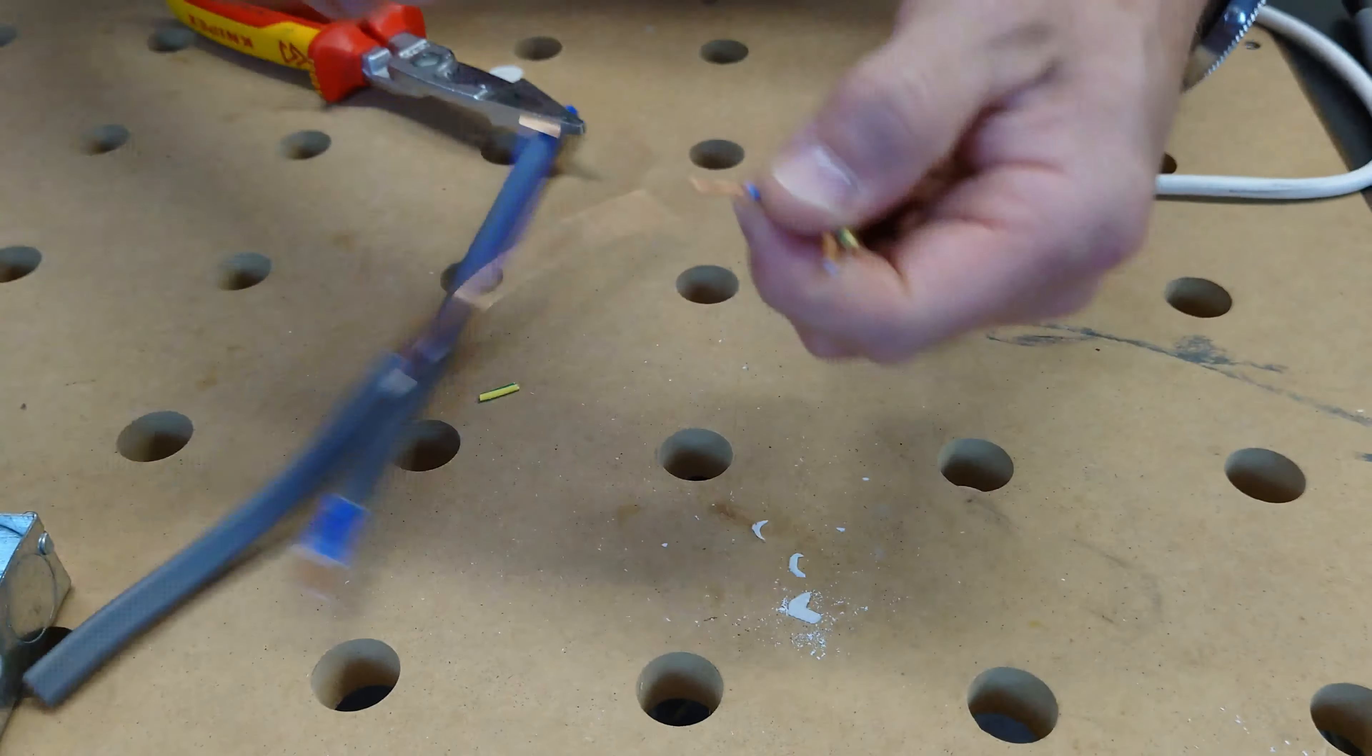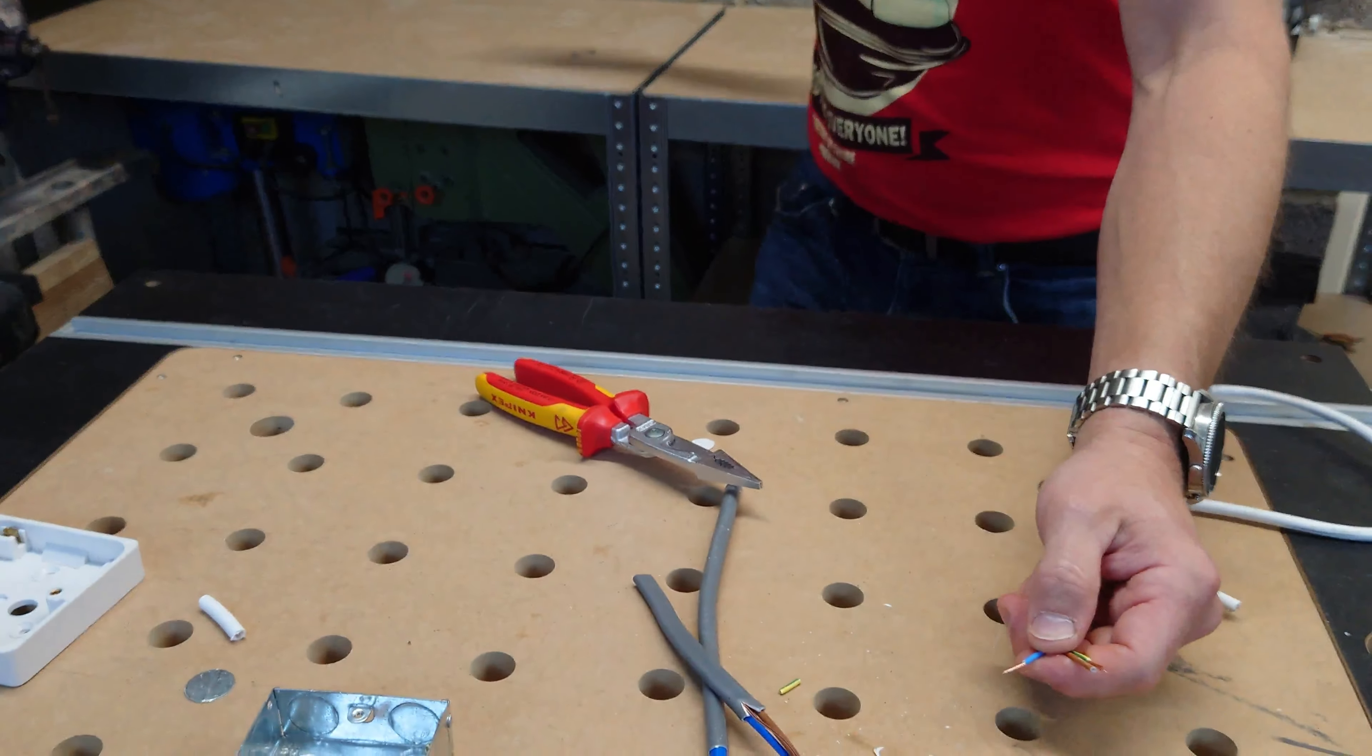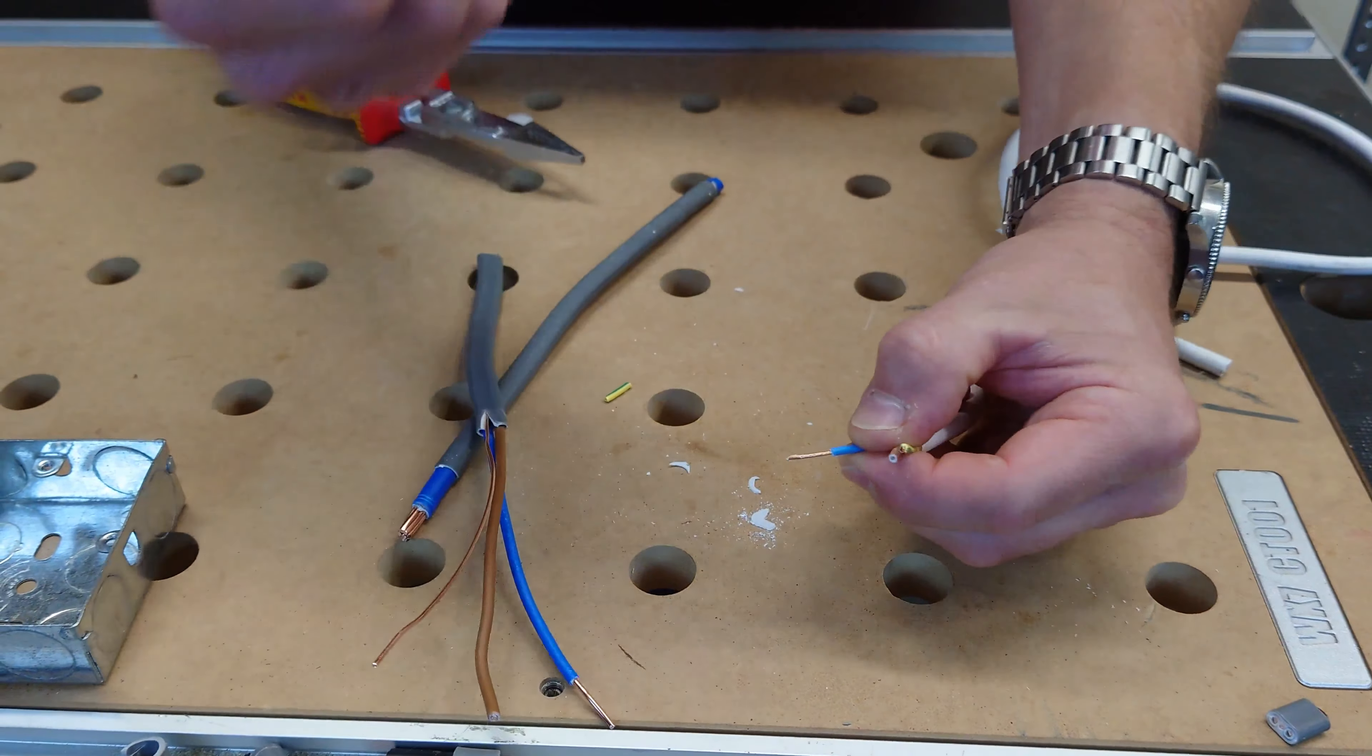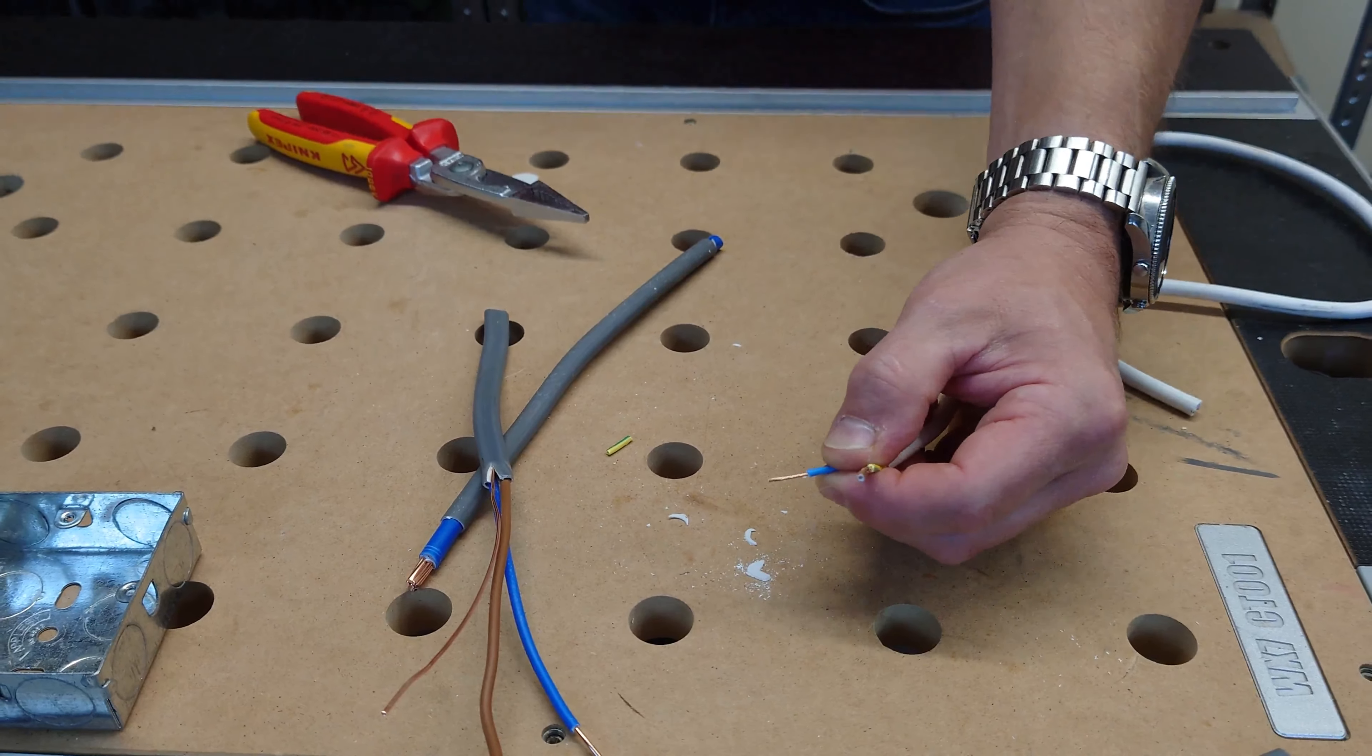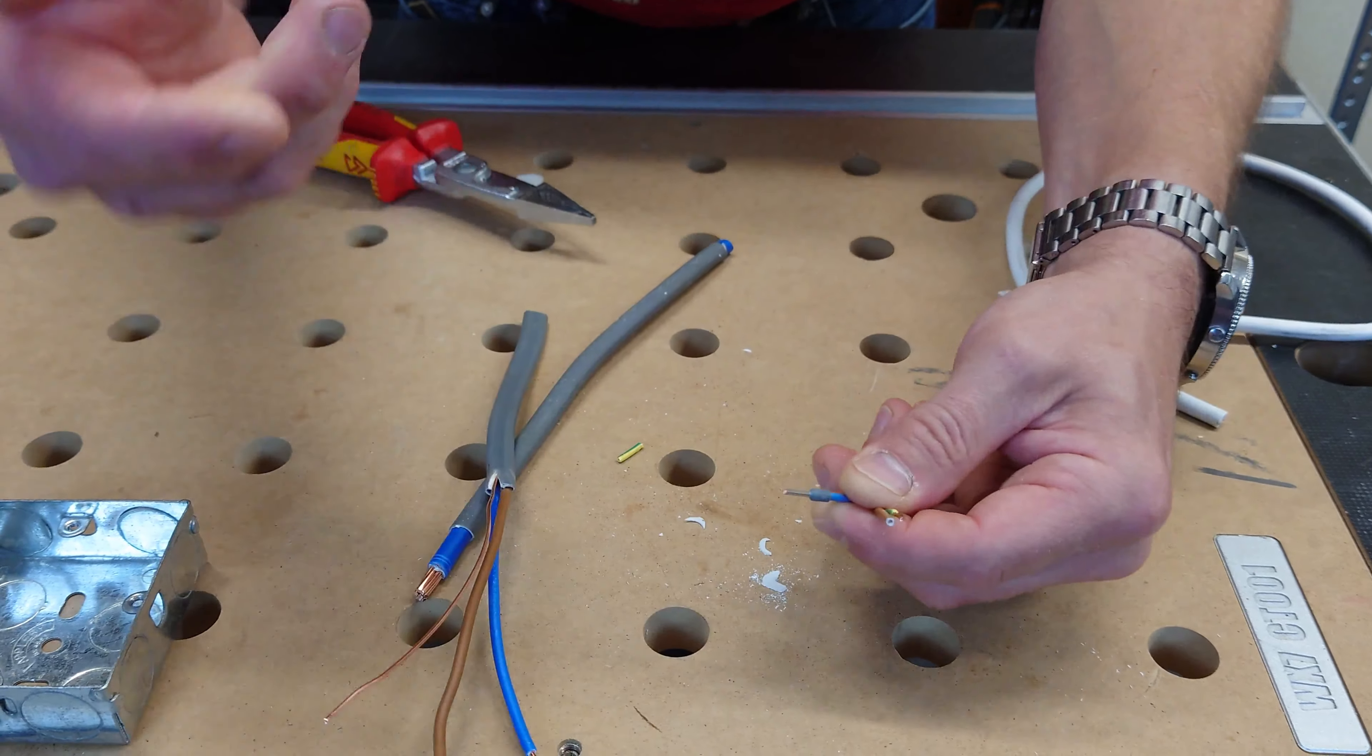And what's even better is they have a built-in crimping tool, which just slide that on there. Always on camera, isn't it? That's why I always keep a spare. Slide it on.